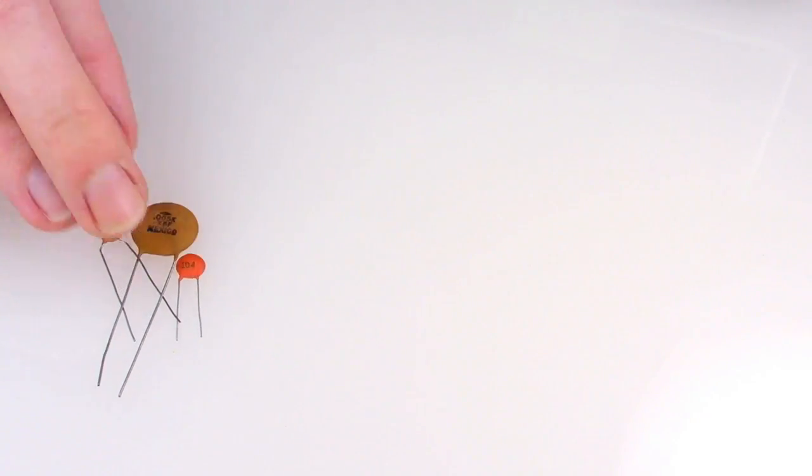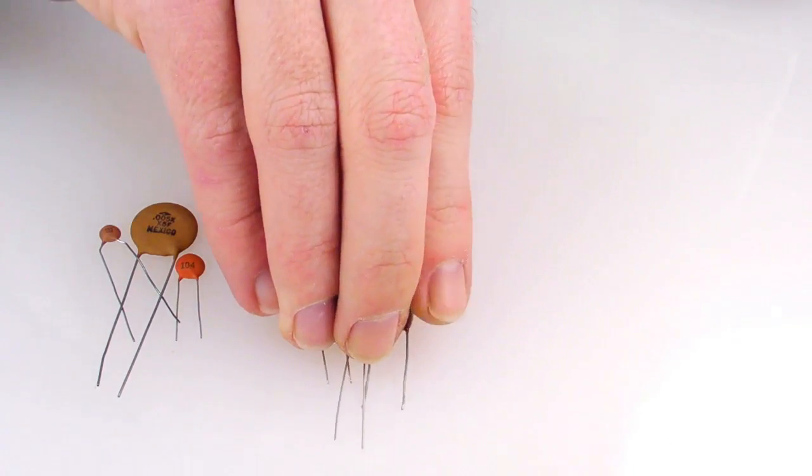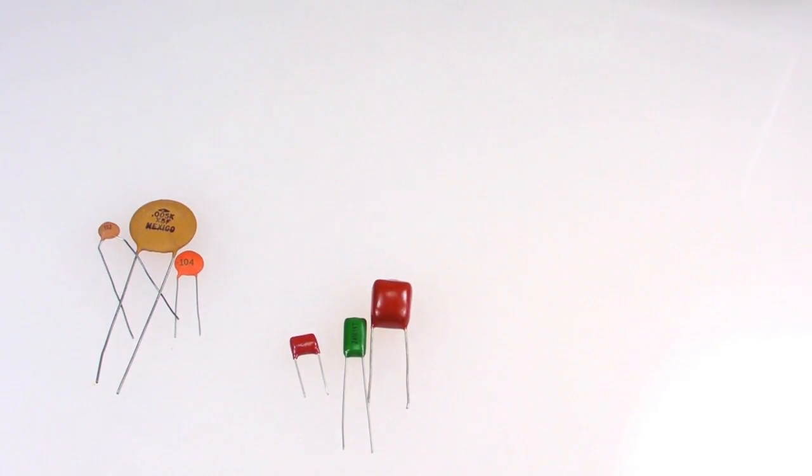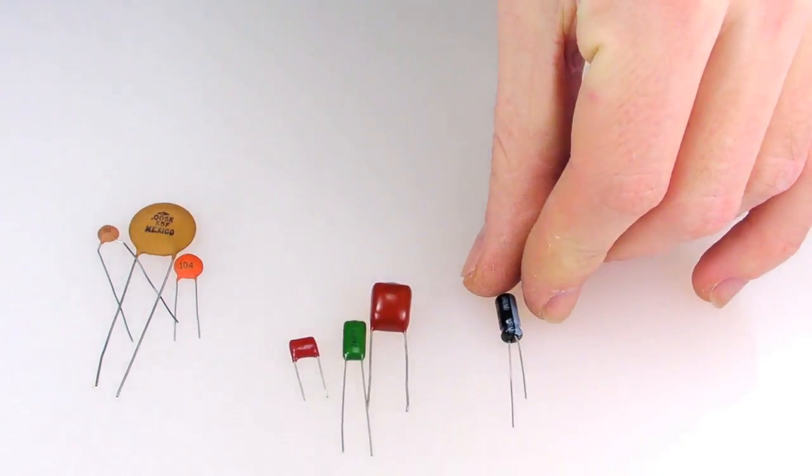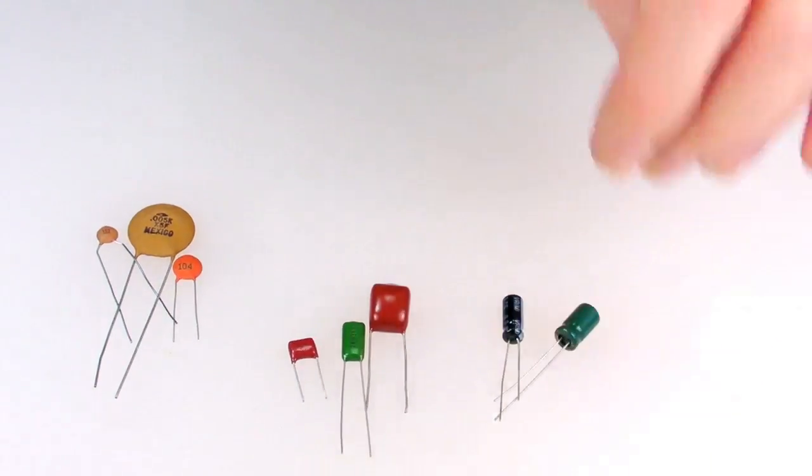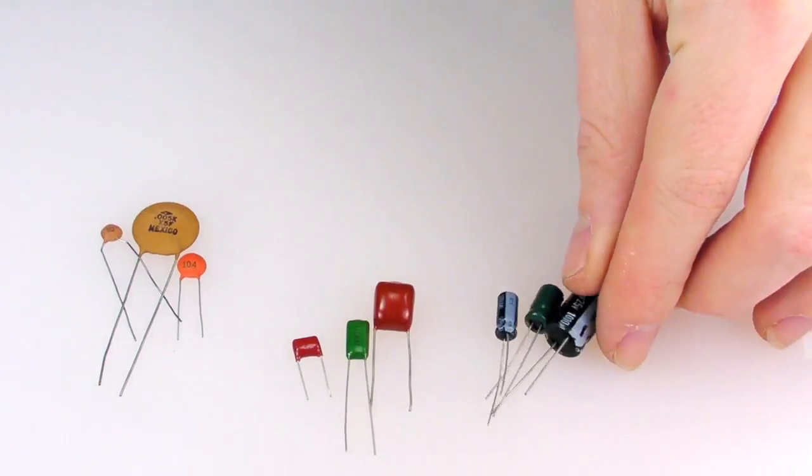And they come in a really wide variety. Just to name a few, there is the classic ceramic disk capacitor, the handsome polyfilm cap, and of course the cylindrical tower of power, the electrolytic capacitor. And some of these electrolytics can be very large.